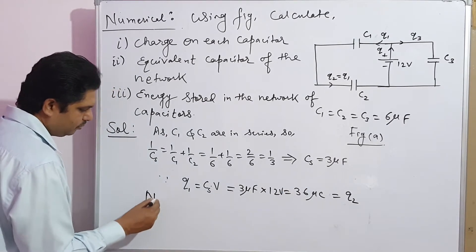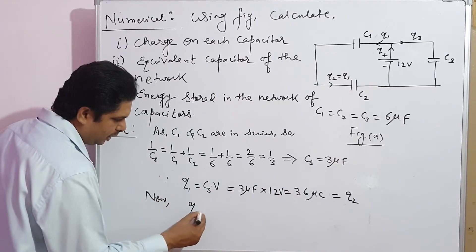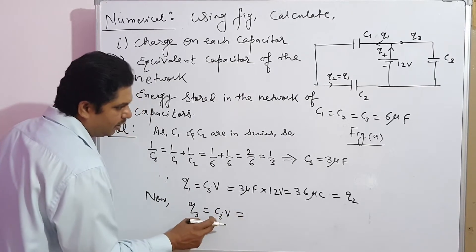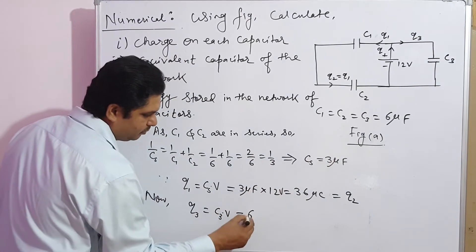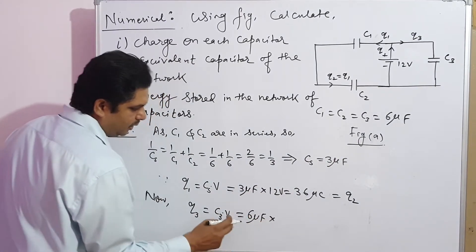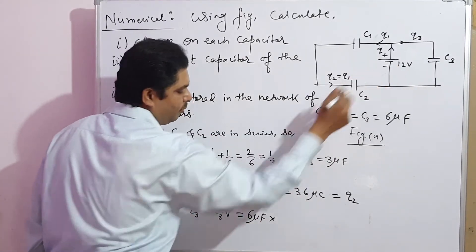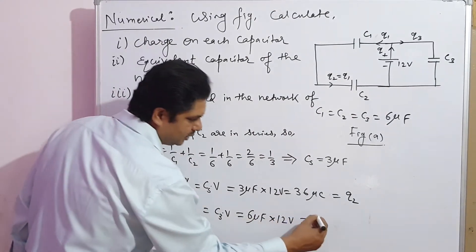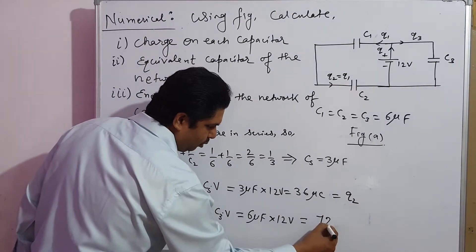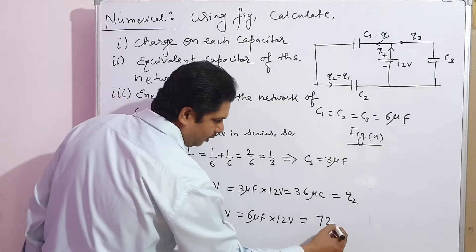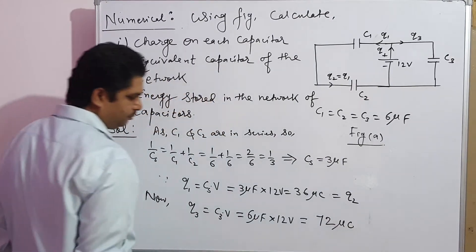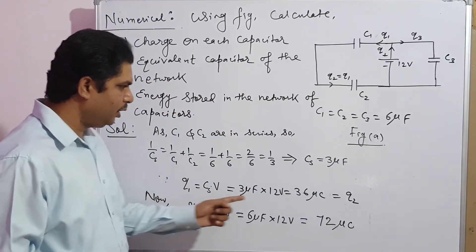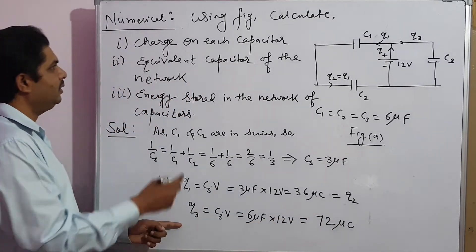Now, Q3 equals C3 into V. The value of C3 is 6 microfarad and V is 12 volt, so Q3 equals 12 into 6 equals 72 microcoulombs. So we have found Q1, Q2, and Q3 — the first part, charge on each capacitor, is resolved.